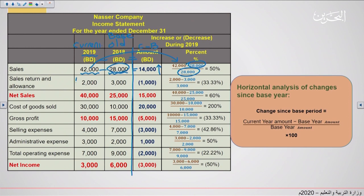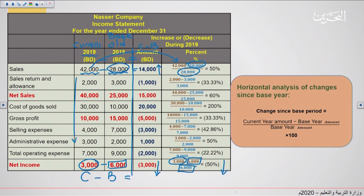The same method applies for the remaining income statement items. For net income: the current amount is 3,000. The formula gives 3,000 minus 6,000, divided by 6,000, equals 50% decrease. The result is a decrease because the answer is negative — the current year net income is less than the base year.